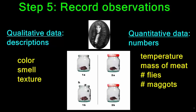The data that Redi was most interested in was whether or not there were maggots in the meat at the end of the experiment. What he found was that there were maggots only in the experimental group — not in the control group that had the cover on the jar. This confirmed that spontaneous generation was not correct.